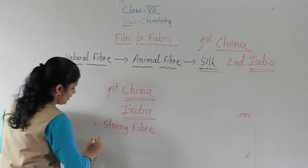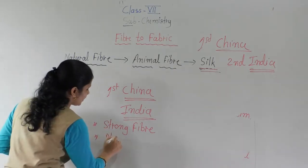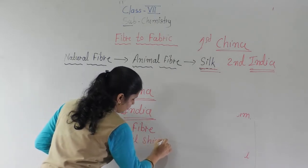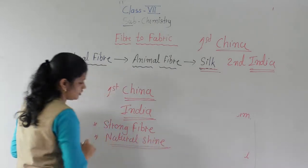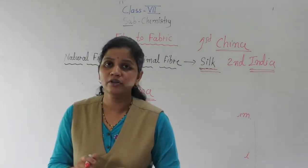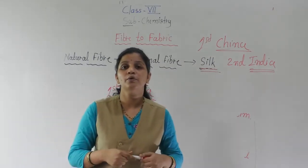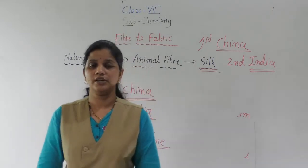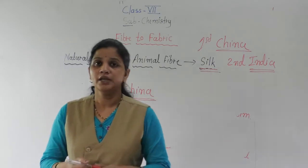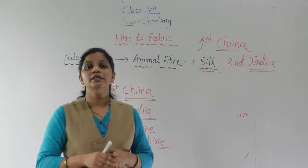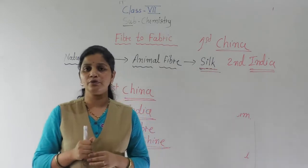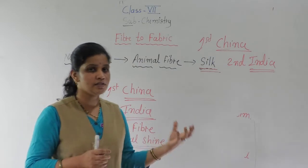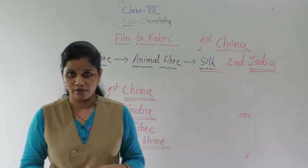Silk has a natural shine, and because of this, when you go to purchase the original silk it is very costly. Why is it costly? Because it is a strong fiber, it is a very soft fiber also, and it has a natural shine — because of these characteristics of silk, it is very costly.